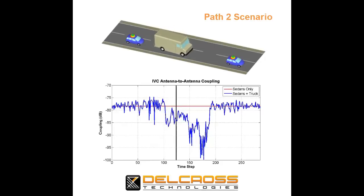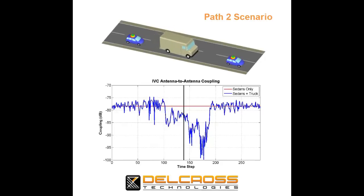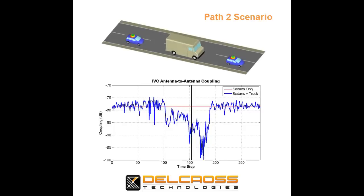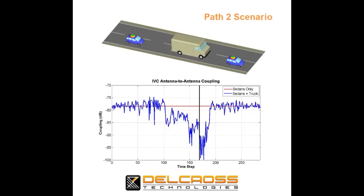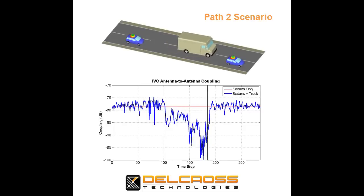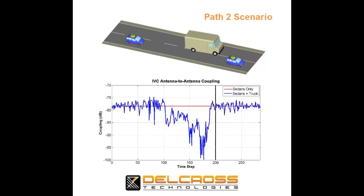That's in contrast to the previous scenario where we saw the link increase. The dynamic range of the antenna coupling for this scenario is about 25 dB, which will show up as a signal strength modulation in practice.